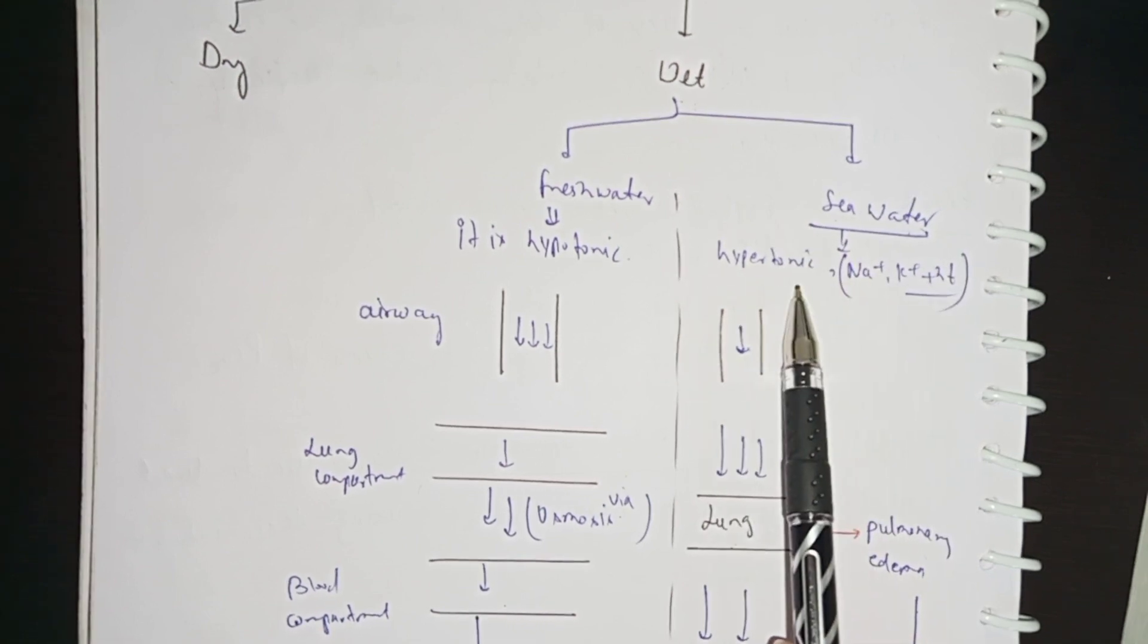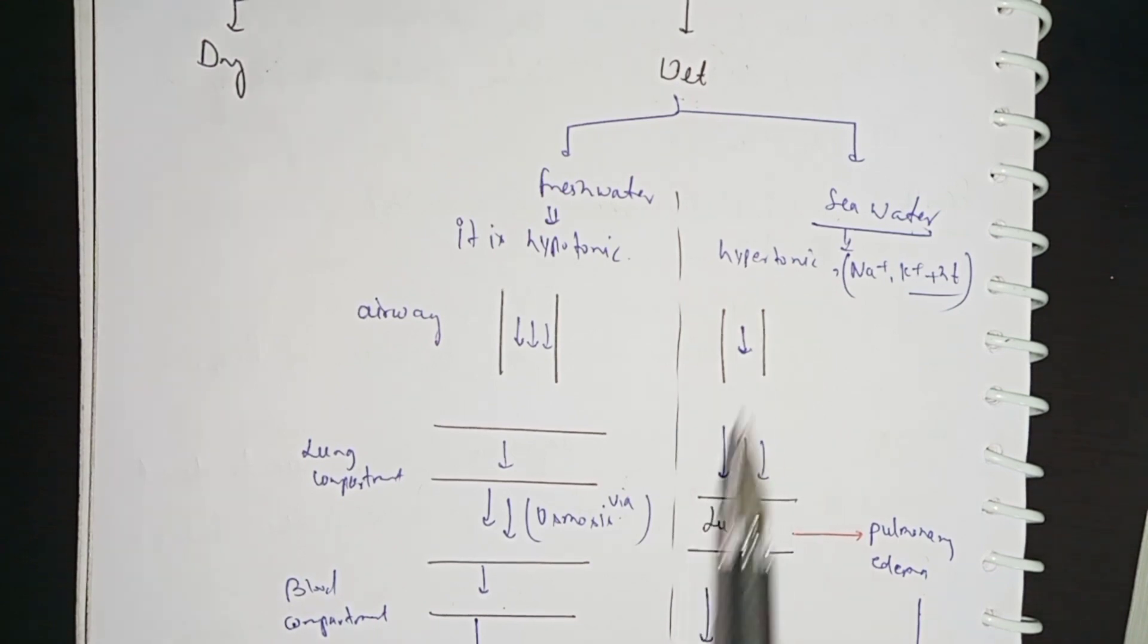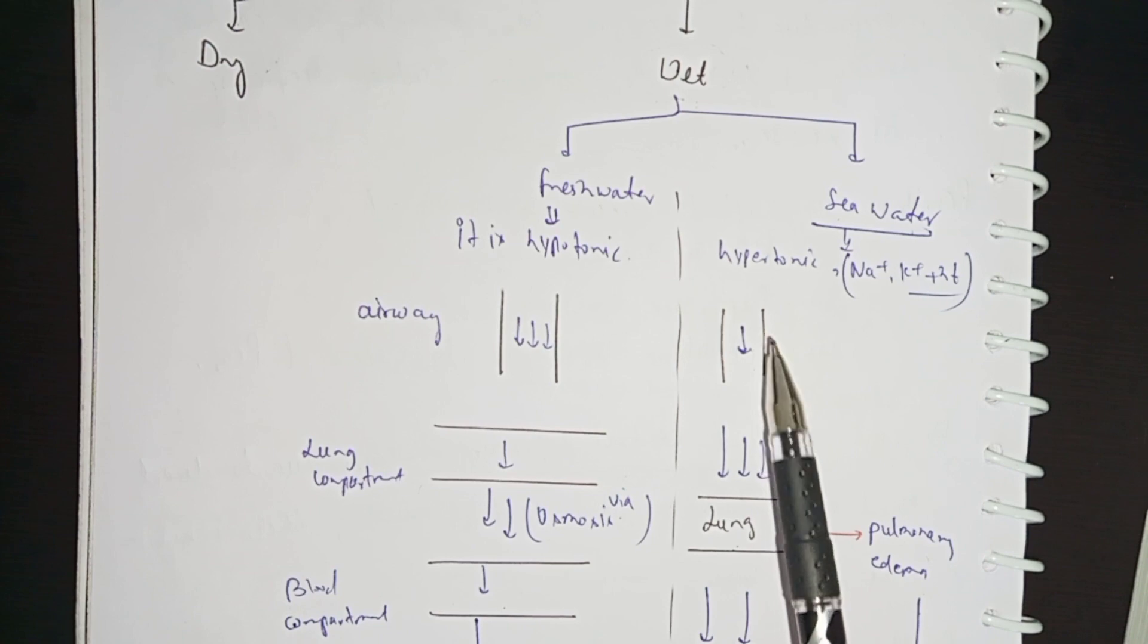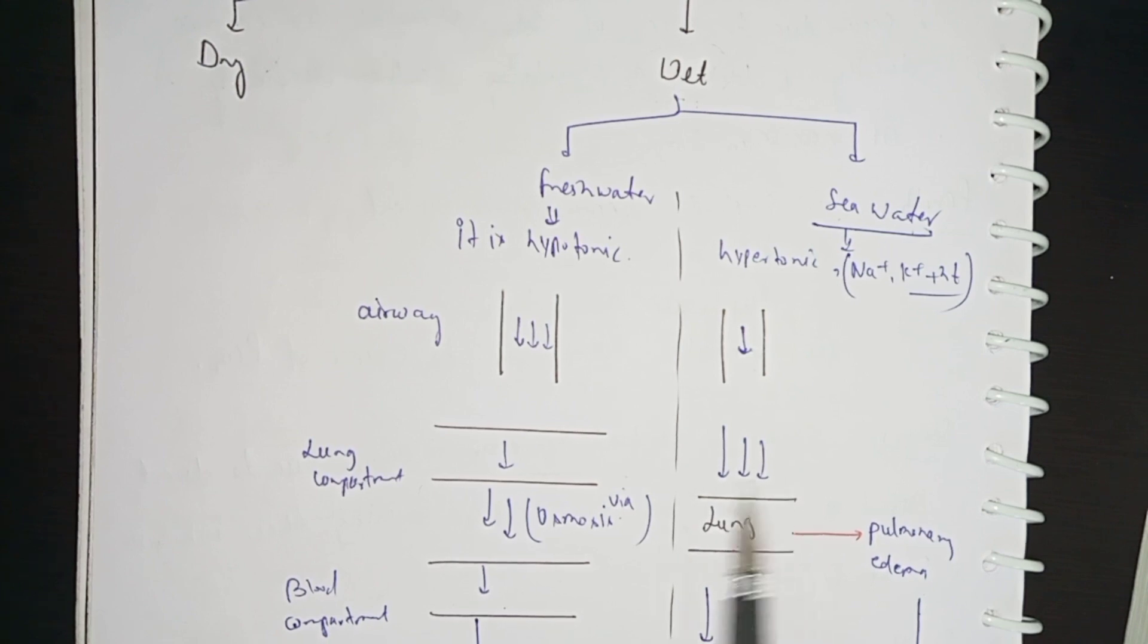So it will be hypertonic and follow the same path: airway, lung, and blood. In the lungs, the water is hypertonic, but the water in the blood is hypotonic.